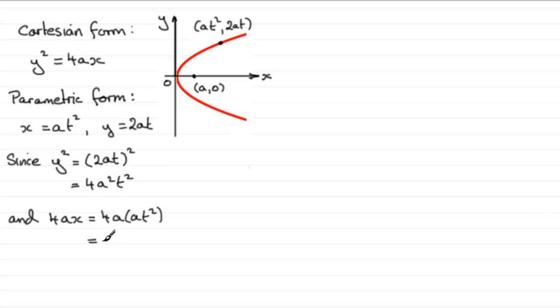If I multiply this out I get 4a²t², so you can see this satisfies the equation y squared equals 4ax. They both give exactly the same result. So we have up here the parametric form of the equation. Let's just put a box around that, and it's important that you learn that result.